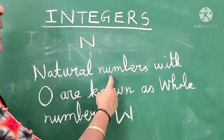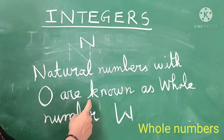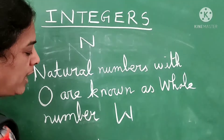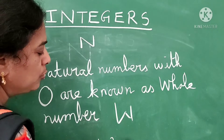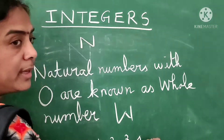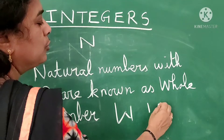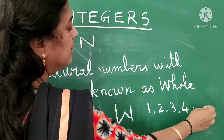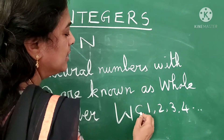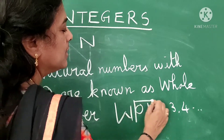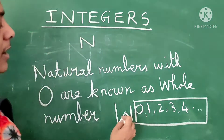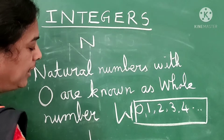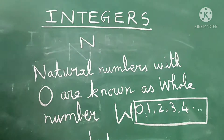Natural numbers with 0 are known as whole numbers. Counting numbers are 1, 2, 3, 4, etc. Now we are adding 0 with it. This is known as whole numbers, and whole numbers are denoted as capital W.